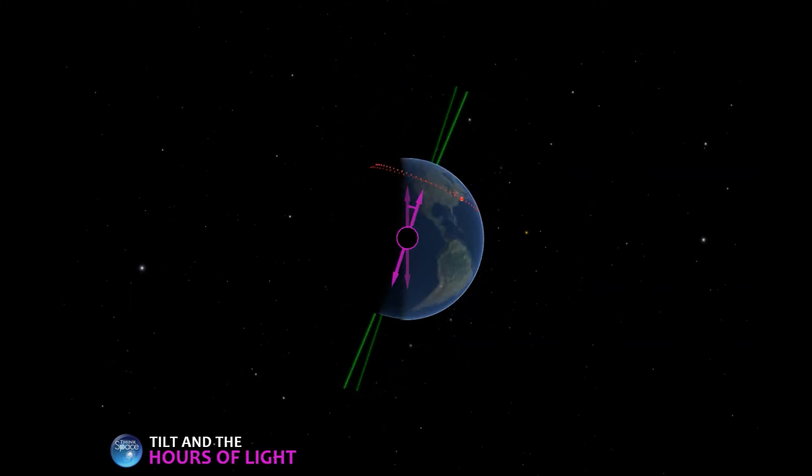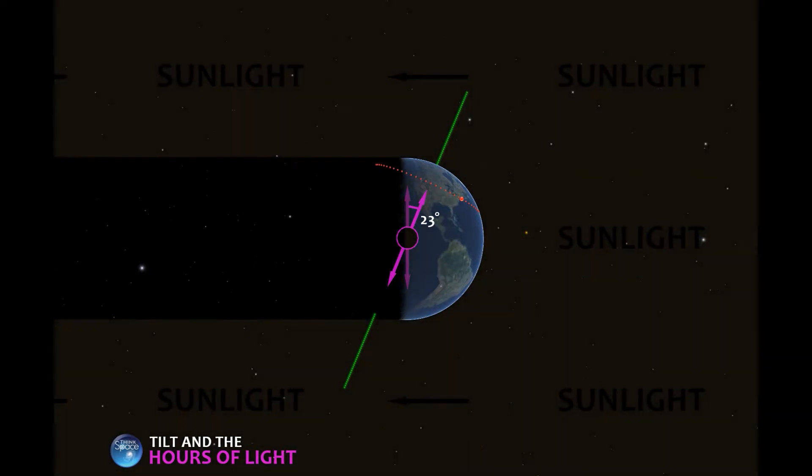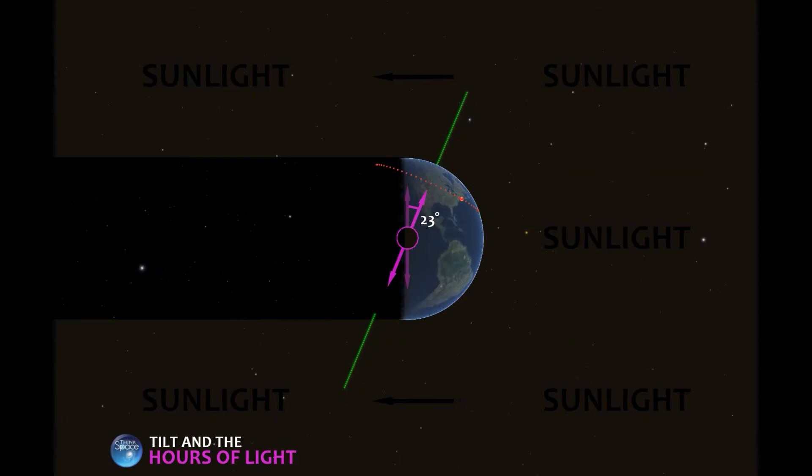However, because of the 23 degree tilt of the axis, during the northern hemisphere summer, the northern axis is tipped into the sunlight. This is why northern hemisphere places get more hours of daylight during the northern hemisphere summer.